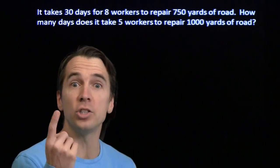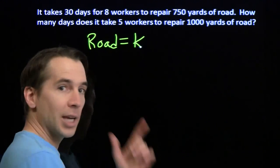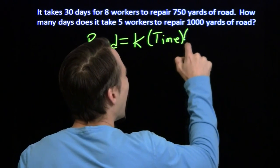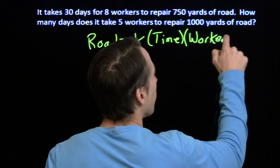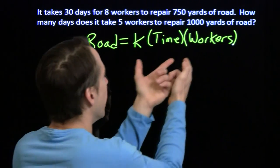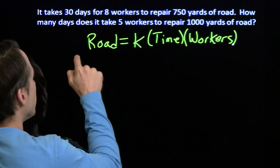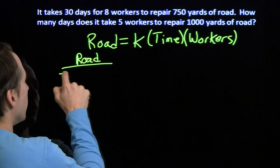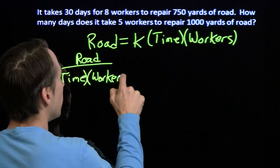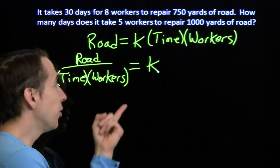There's a special term in math for that — we call it a joint proportion, and we can express it like this: the amount of road is some constant k times the amount of time and times the number of workers. So if you double the amount of time and keep the workers constant, you double the road. If you double the number of workers and keep time constant, you double the road as well. I can rearrange this: road divided by time times workers equals a constant.